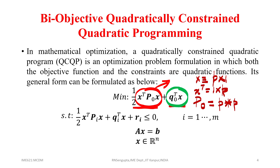Considering the constraints: it is a biobjective problem with a quadratic objective — quadratic and linear parts explained. It is quadratically constrained quadratic programming because the constraints themselves are quadratic. Each constraint has a quadratic component x-transpose P_i x, where P_i is a matrix. The index i goes from 1 to M, so with M equal to 3 there are three such constraints.